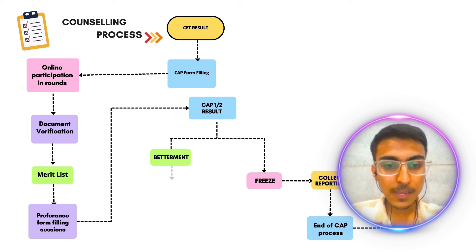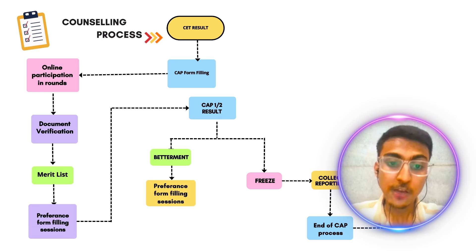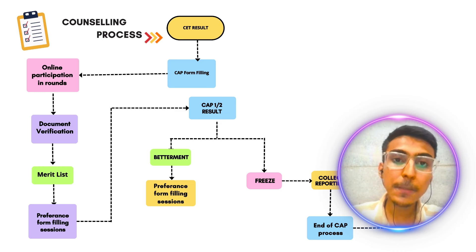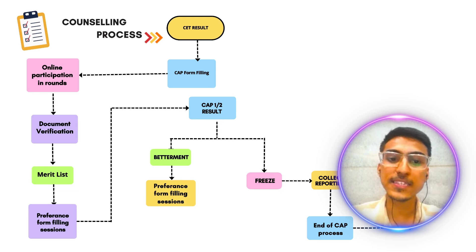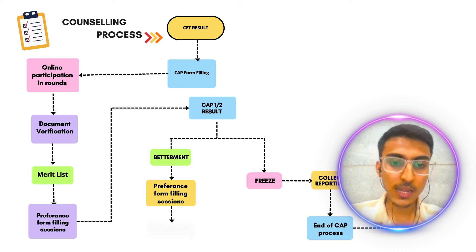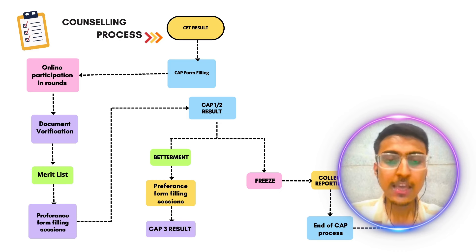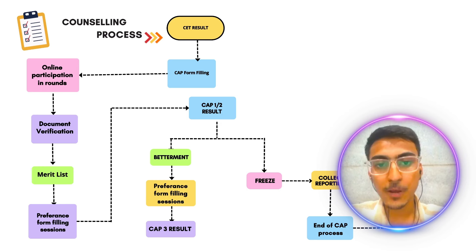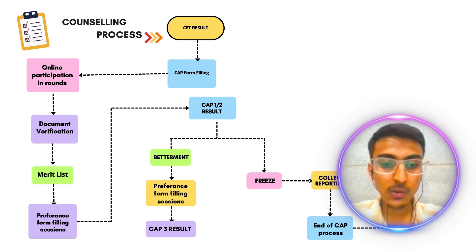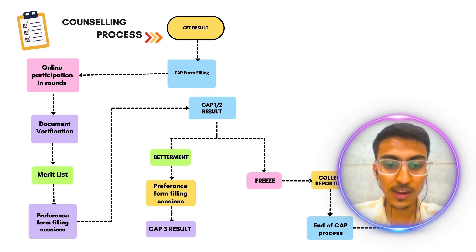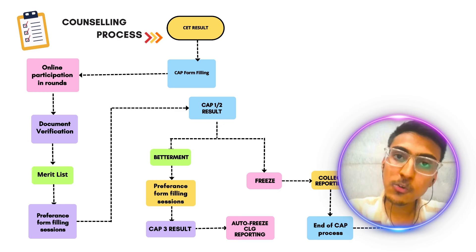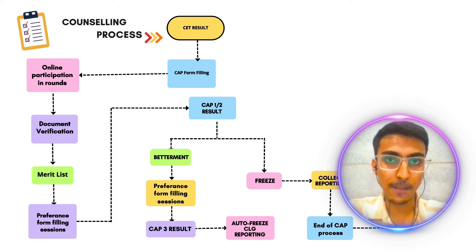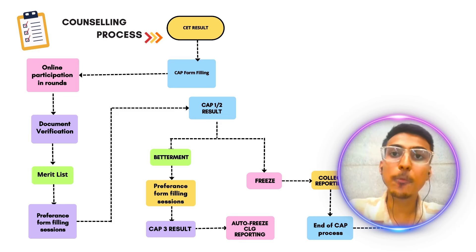अगर आपने betterment पे किया, तो आप आगे वाले further rounds के लिए eligible रहते हो। Further rounds के लिए वापस से आपको preference form भरने का chance मिलेगा। वापस से preference form fill करने पर CAP round का result आएगा — अगर आपने CAP 1 में betterment किया तो CAP 2 का result आएगा, जैसे आपने CAP 2 में किया तो CAP 3 में result आएगा। And CAP 3 is the last round — आपके 3 ही CAP rounds होते हैं हर साल। CAP 3 का जैसे round खतम होता है, result आता है, उसके बाद auto freeze होता है। CAP Round 3 में आपको जो भी college मिला वो auto freeze हो जाएगा — उसी college में आपको admission लेना पड़ेगा।